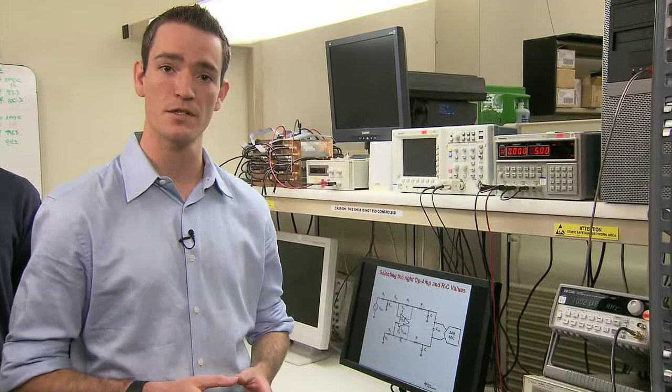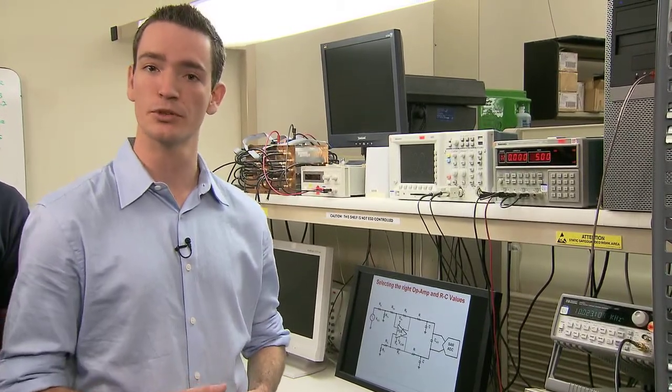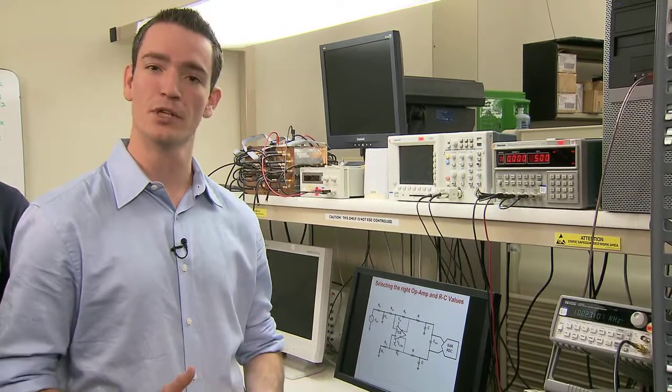What we want to be discussing with you today is a common problem with really high precision SAR ADCs, right around 16 to 18 bits. You have a fully differential front end. How do you drive that? How do you really get datasheet values out of it?